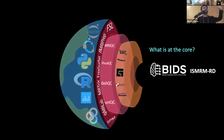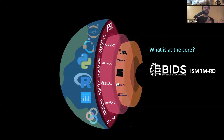At the core it's standards — BIDS being one of them. How many know about the ISMRM raw data standard, MRD? These two are completely different: ISMRM raw data is about the K-space data, what comes out of the scanner, while BIDS is about what you do after you reconstruct the data. If you're not aware of MRD, you're missing half the story of how these images are generated.